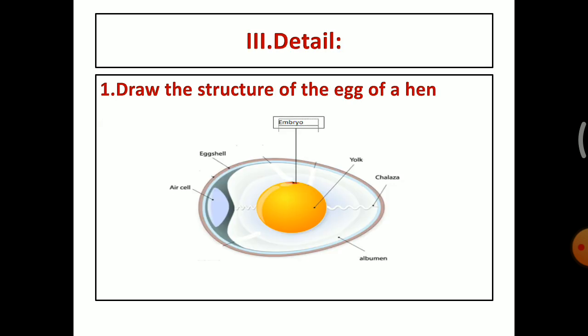The next Roman letter 3, detail. The first question, draw the structure of the egg of a hen. You have to draw an egg and mark the point yolk, embryo, chalaza, albumen, air sac, shell and eggshell. Give a color and mark the parts.